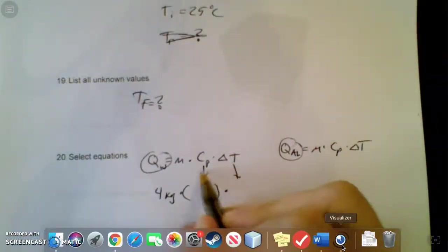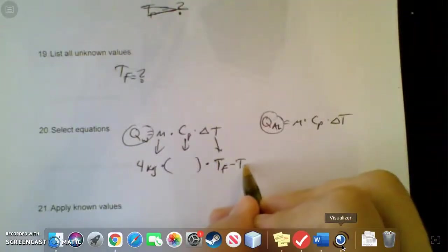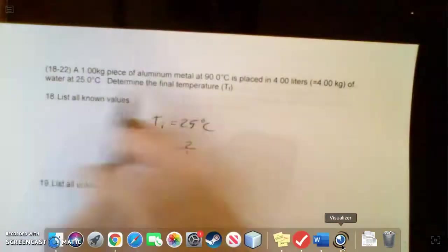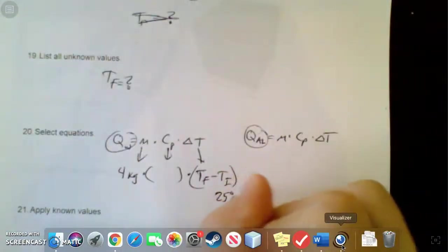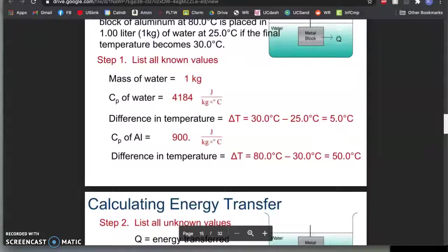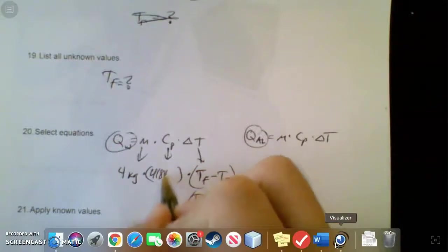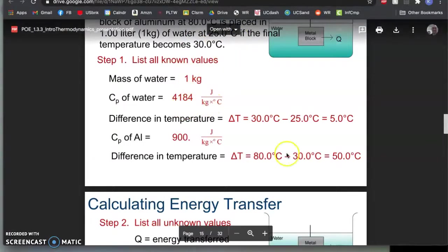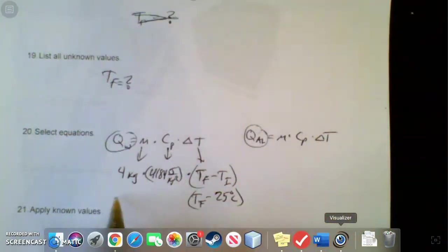Instead of change in temperature, I'm going to write temperature final minus temperature initial. Now I know I can actually put a number in here because for the water my initial temperature was 25 degrees Celsius, so down here I'm gonna put 25 degrees C. I still don't know TF. I do have to write this number 4184.